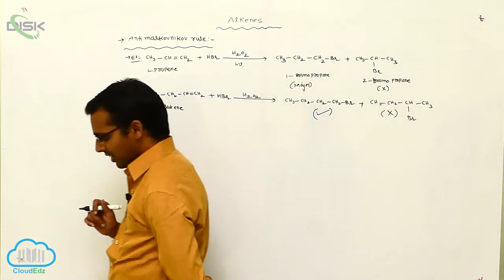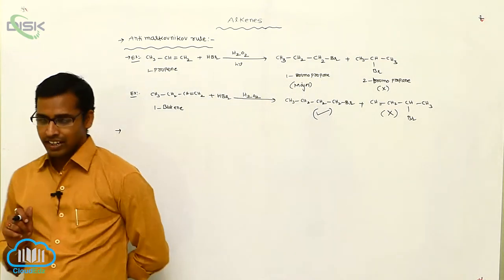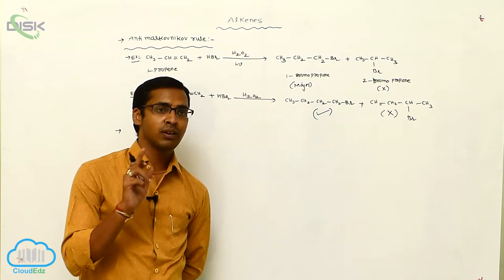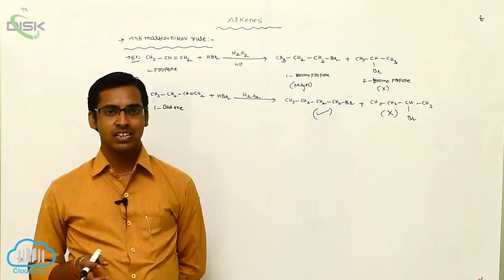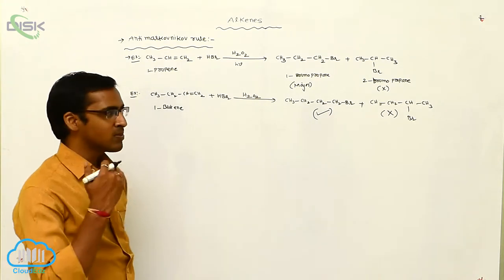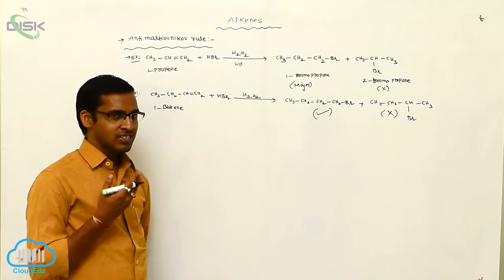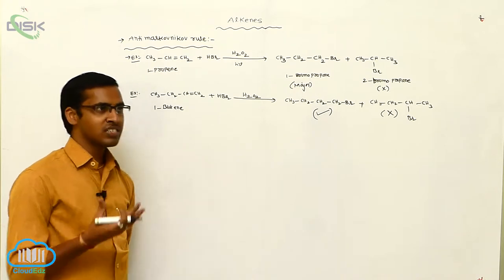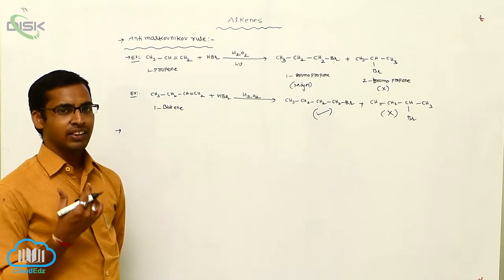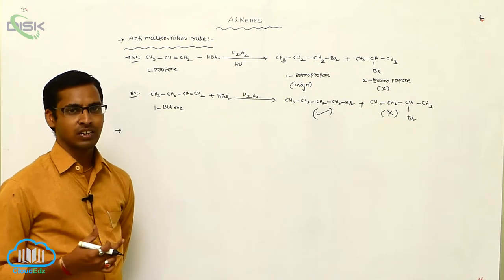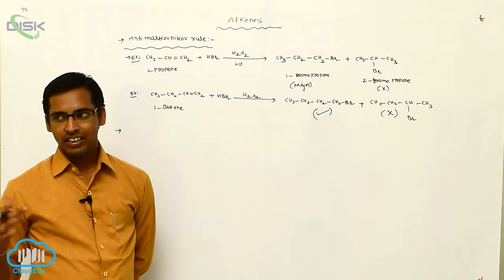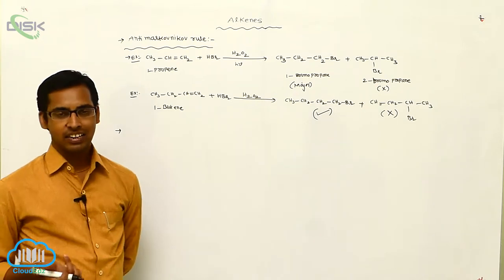Generally, alkenes exhibit geometrical isomerism. One type is the cis isomer and another is the trans isomer. Which isomer is more stable? And how do we identify whether a given compound is a trans alkene or a cis alkene?